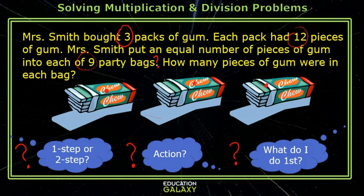Imagine that I have three packs of gum. I want to figure out how many are going to go in the party bags, but first I have to figure out how much gum I have. So this is definitely a two-step problem.